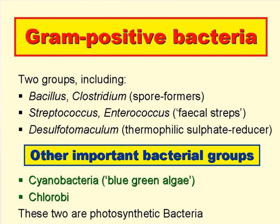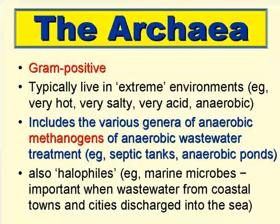There are other important groups in the Bacteria — for example, the cyanobacteria and the Chlorobi, which are both photosynthetic. Now the domain Archaea. All archaea are gram-positive. They typically live in extreme environments, for example where it's very hot, very salty, or very acid, and often where there's no oxygen. They include the methanogens — the microbes that produce methane, CH4 — so they're found in septic tanks, anaerobic ponds, and anaerobic sludge digesters. They also include the halophiles, or salt lovers, such as marine bacteria, and these are important if we discharge raw or treated wastewater into the sea.